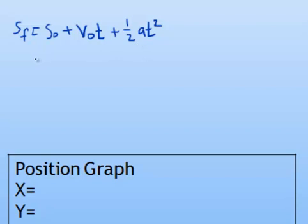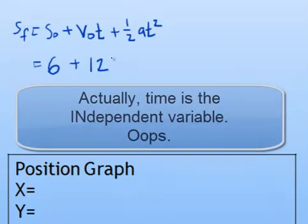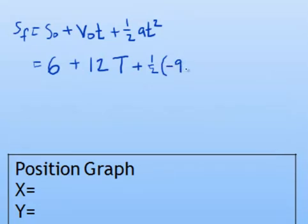The initial position, we said, was 6. The initial velocity, we looked at the other graph and said that was 12. Time is going to be our dependent variable. We're going to leave it in there. And we said the acceleration was the typical negative 9.8 that we've seen before. And again, time is the variable. We're going to leave it in there.